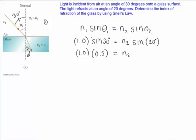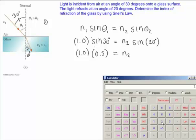And then I want to figure out what sine of 20 is, so I take 20 and I hit sine and that gives me 0.342.